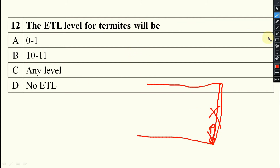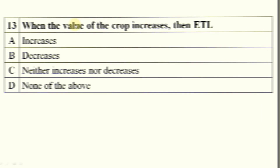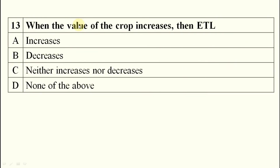For termites, no ETL applies — if you find them, immediately destroy them. When the value of the crop increases, the ETL decreases, because they are inversely proportional.